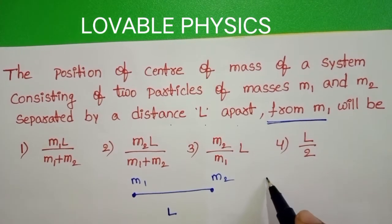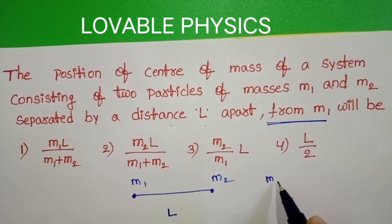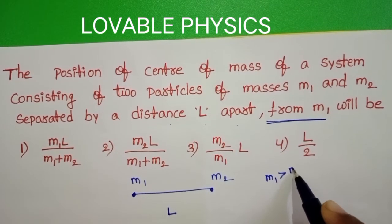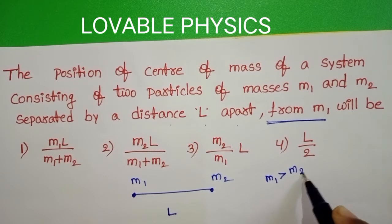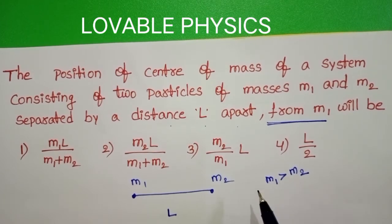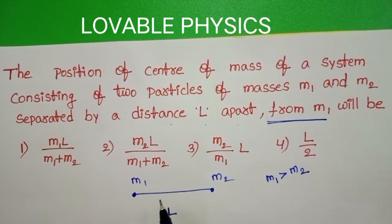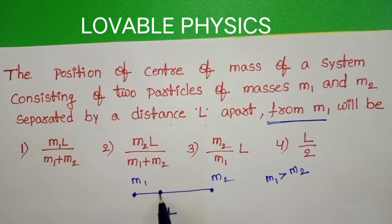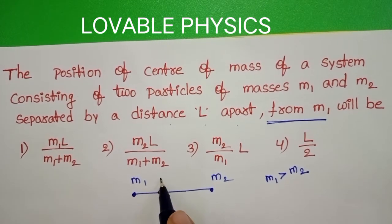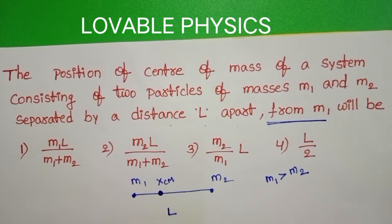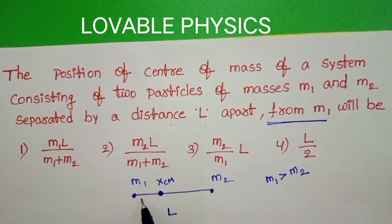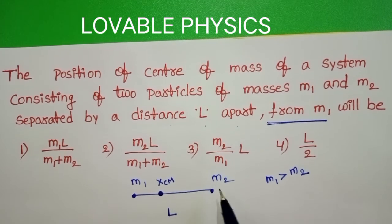Let us take the mass of the first particle is greater than the mass of the second particle. Then the position of center of mass is nearer to the heavier mass. If M2 is greater than M1, then the position of center of mass is nearer to M2.